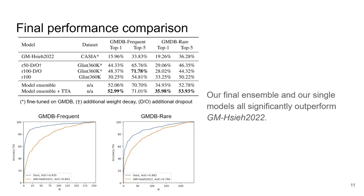Finally, putting everything together, we compared the performance of the old model and the new ones. Though we focused on top-one and top-five accuracy, as this has the highest impact in genetic counseling, we also included the top-N accuracy on the Frequent and Rare sets to show the overall improvement. As can be seen from the table and the figures, our approach significantly outperforms Shi et al.'s GestaltMatcher on every split.